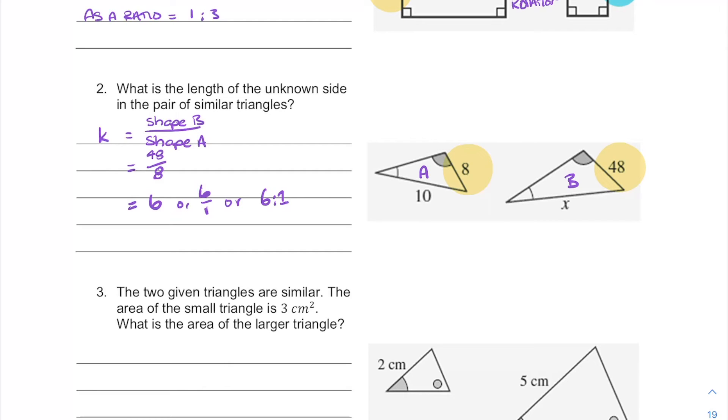So then our next part of this problem is we want to know what x equals. So x is our unknown side. It's got a corresponding side here with the 10. So I'm just going to go 10 times 6, because the 8 gets multiplied by 6 to get to 48. So the 10 gets multiplied by 6 to get to its value, which will be 60. We don't have any units for this one, so we can just leave it like that.